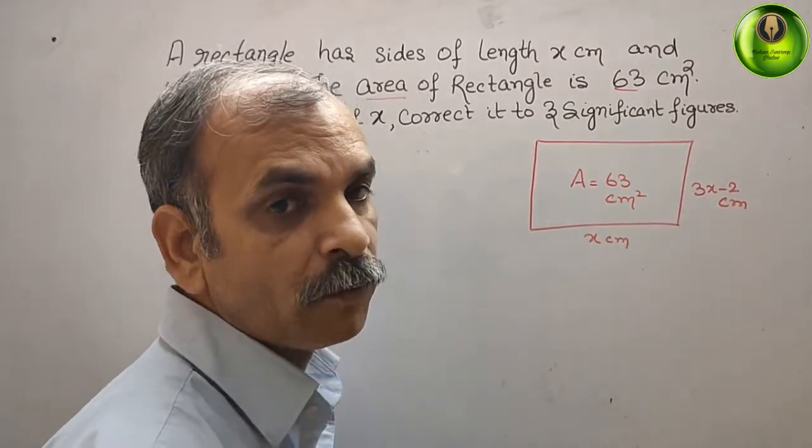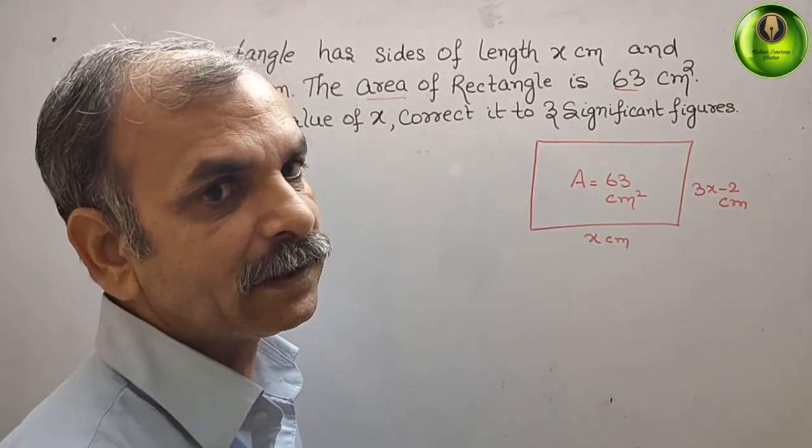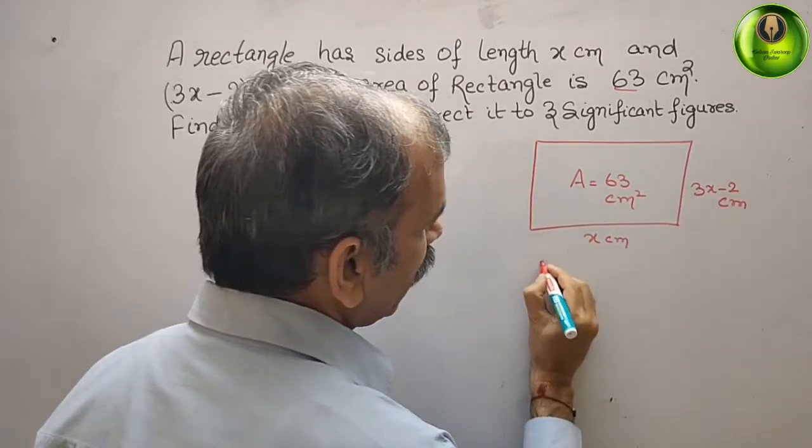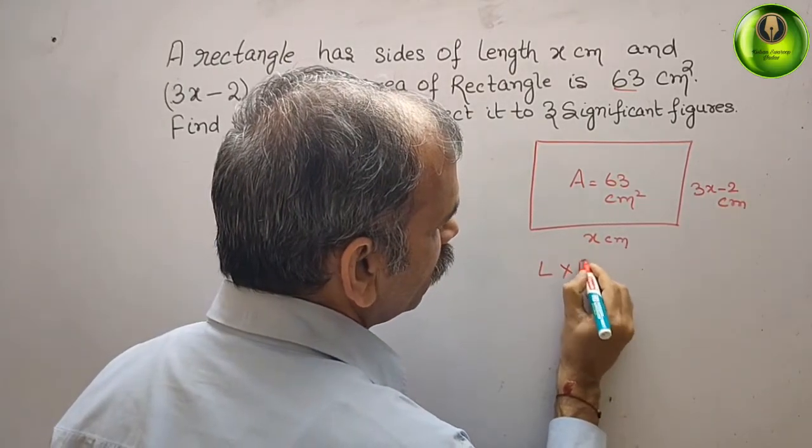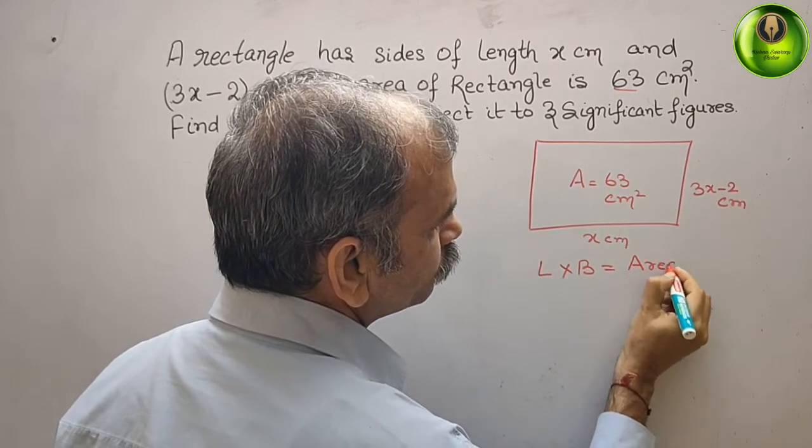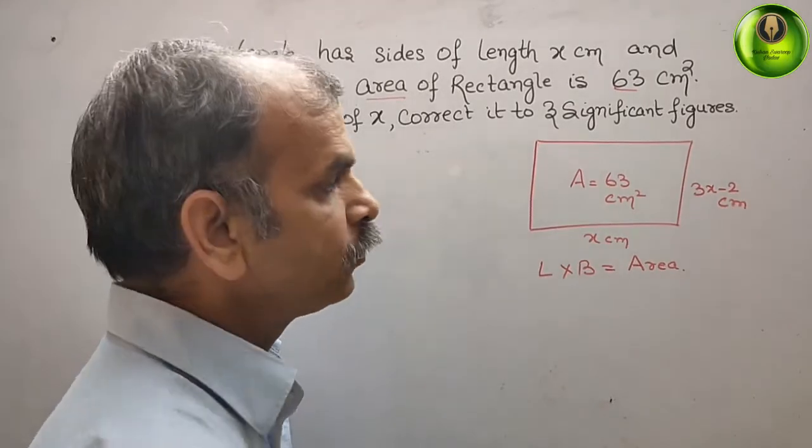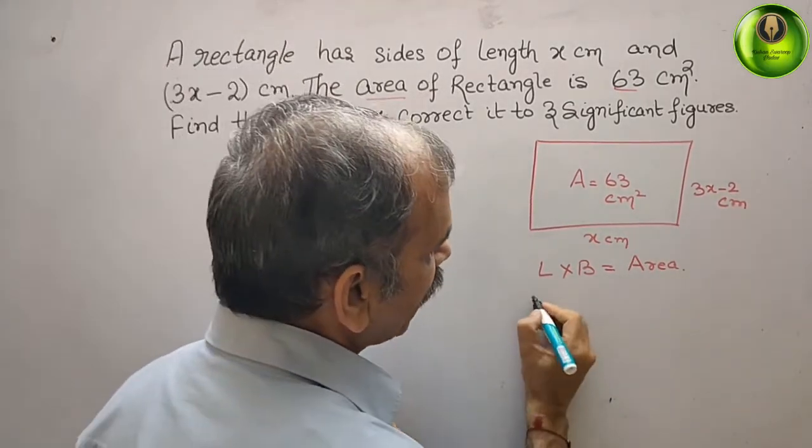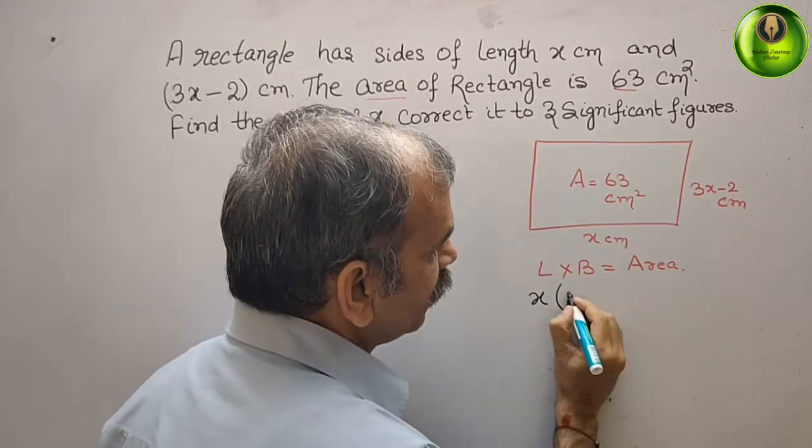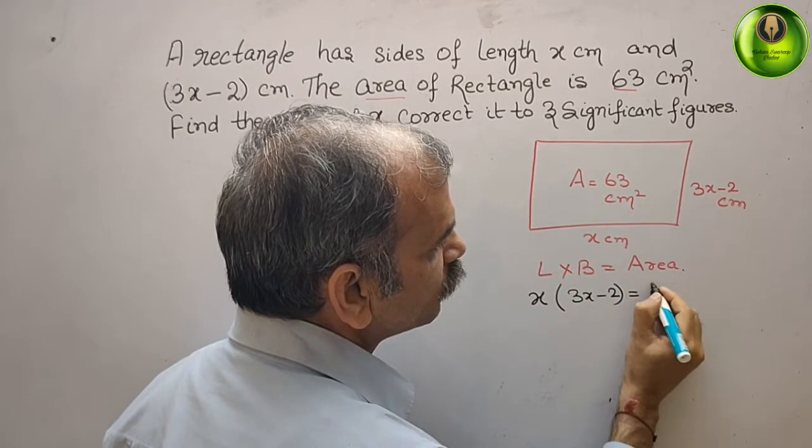We know the formula for area for a rectangle. What is that? Length times breadth. That only we will do. L times B, that gives you A, area. Now, substitute the value. What we will get? We get x into bracket 3x minus 2. That gives you 63.